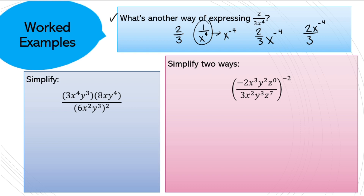Let's look at this example — there's a lot going on. I'm going to simplify the numerator and denominator separately, then combine and simplify. In the numerator: 3 times 8 = 24; x⁴ times x¹ adds exponents to give x⁵; y³ times y⁴ gives y⁷. That's the simplified numerator.